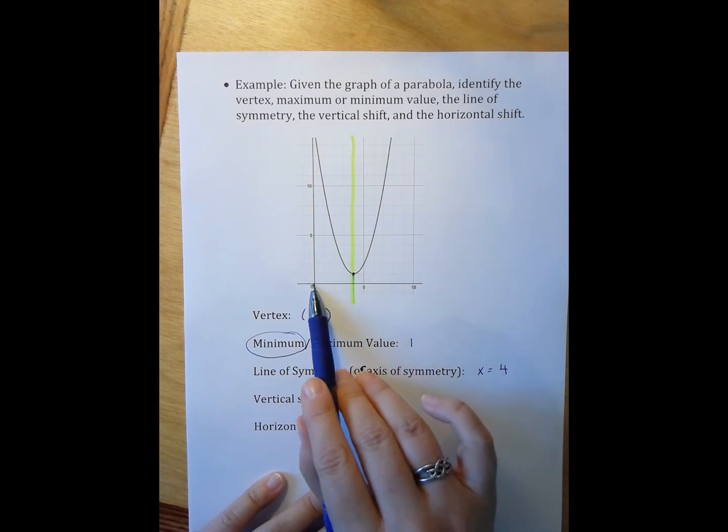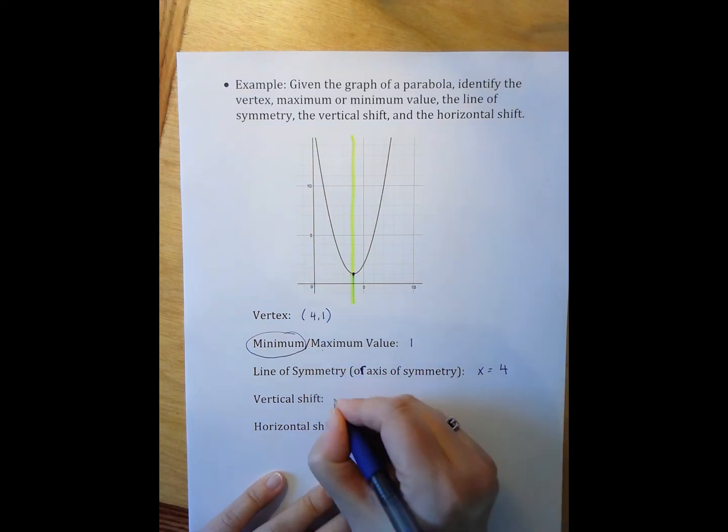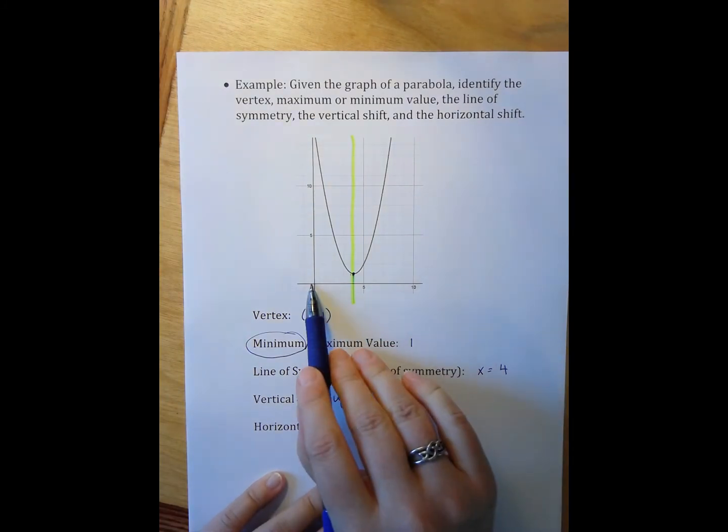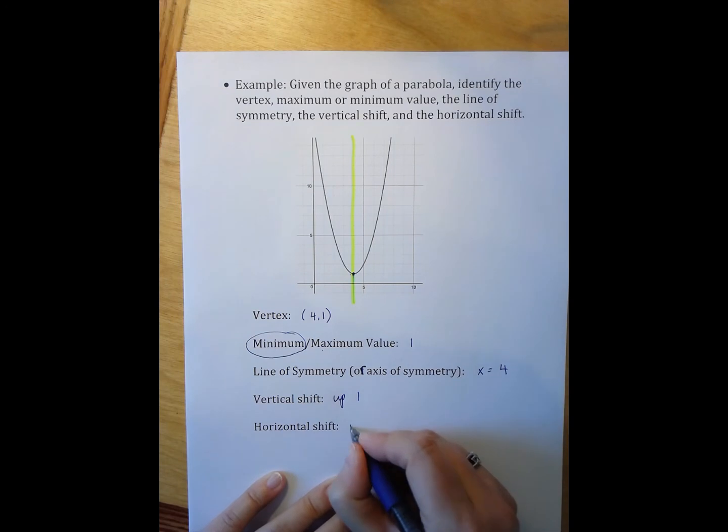Which means vertical, it is moved up one. And horizontal, it is moved right four units.